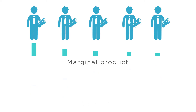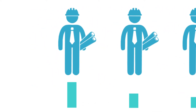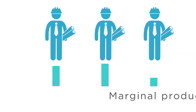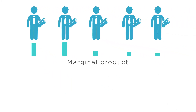This isn't always the case. In some cases, a second worker may have a higher marginal product than the first, since these workers can work together to help each other be more productive. But eventually, each worker will add less and less to the overall productivity.